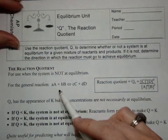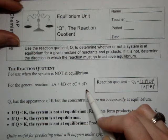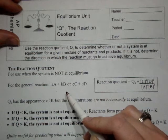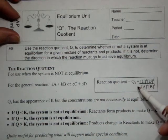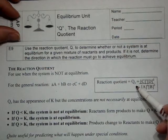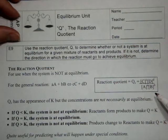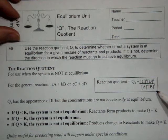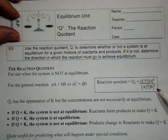If you have the same AA plus BB yields CC plus DD for a reversible reaction, rather than necessarily being at equilibrium, the reaction quotient, or Q, is what are the concentrations right now. They may or may not match equilibrium.